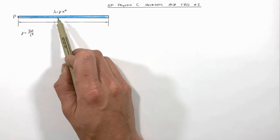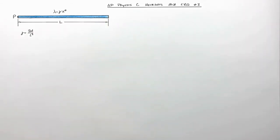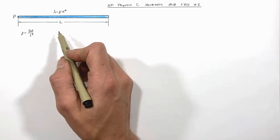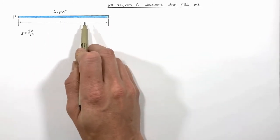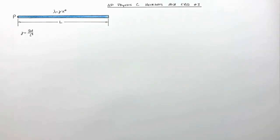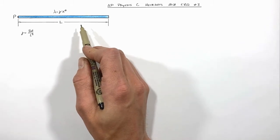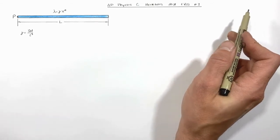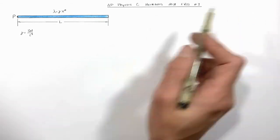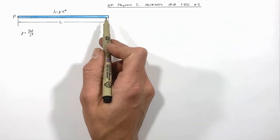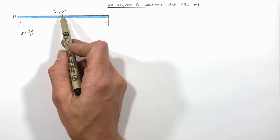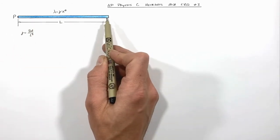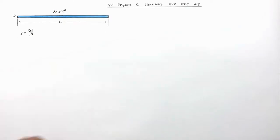The first question asks you to use calculus to show that the rotational inertia of this rod has a certain value. This is not dissimilar to problems I've covered before. But this is not a uniform rod, so we have to deal with the fact that the mass varies as we move from the skinny end to the thick end of the rod.